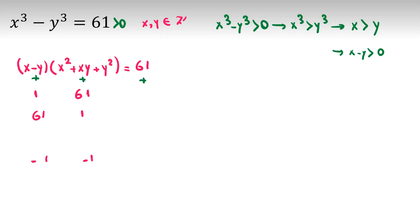Now we can cancel these two cases. So we have two cases: 1 and 61, or 61 and 1. Let's focus on these two cases.